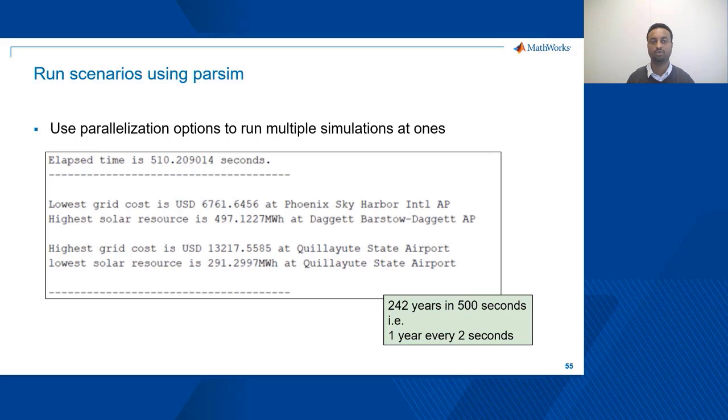For example, we are able to find out the lowest grid cost was at Phoenix Sky Harbor International Airport and the highest solar resource was available at Daggett Barstow Airport. There were also the highest grid cost observed at Quillayute State Airport and the lowest solar resource also captured at the similar location. So in total, we are able to simulate 242 years in less than 10 minutes and answer our technical economy question.